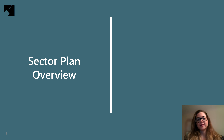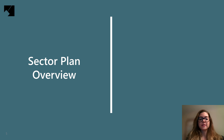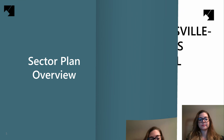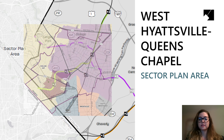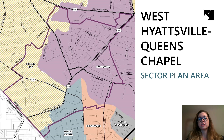Let's start by briefly going over the context for tonight's presentation. The Planning Department, in partnership with the cities of Hyattsville, Mount Rainier, and the Town of Brentwood, County and State Agencies, WMATA, and other local, state, and regional agencies, and you, the residents of this area, began working on a new sector plan for the West Hyattsville Queen's Chapel area in fall of 2020. The sector plan area includes three jurisdictions: Hyattsville, Brentwood, and Mount Rainier, in addition to portions of unincorporated Prince George's County in the areas of Avondale and Chillum.